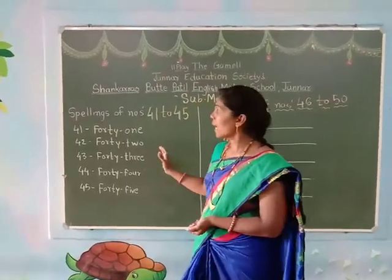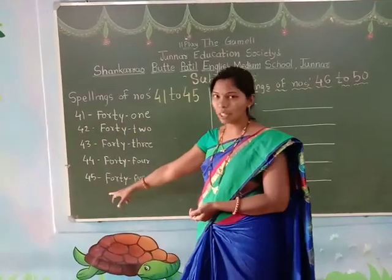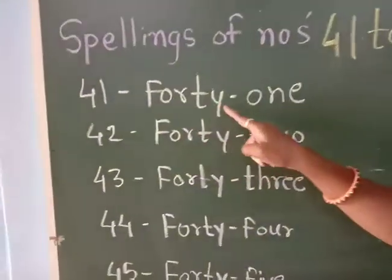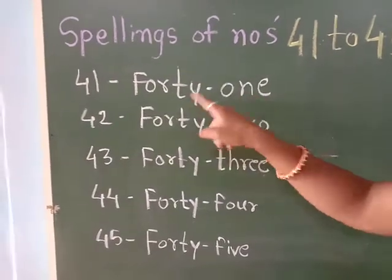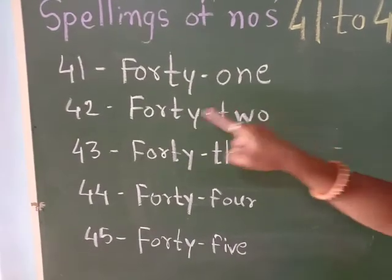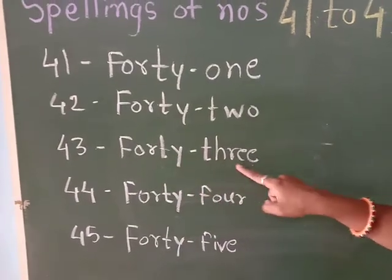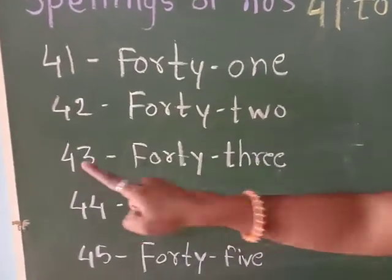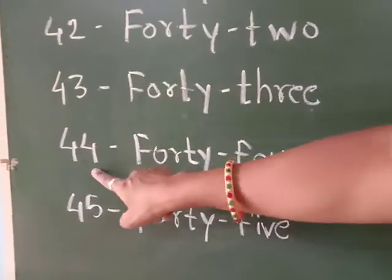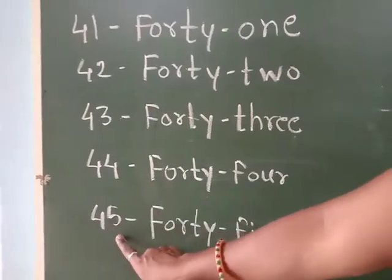But before that, see here — I have already taught you how to write spellings of number 41 up to number 45. So revise it with me. F-O-R-T-Y-O-N-E, 41. F-O-R-T-Y-T-W-O, 42. F-O-R-T-Y-T-H-R-E-E, 43. F-O-R-T-Y-F-O-U-R, 44. Then F-O-R-T-Y-F-I-V-E, 45.